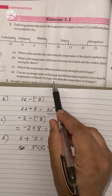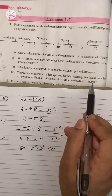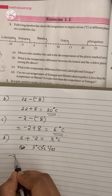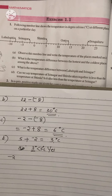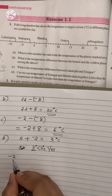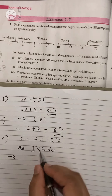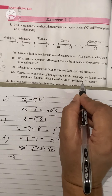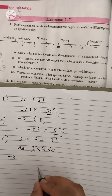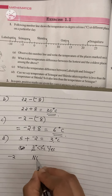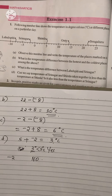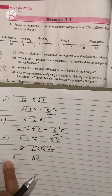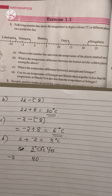Is the combined temperature also less than the temperature at Srinagar? The temperature at Srinagar is minus 2 and we got 3 degree Celsius. Since minus 2 is less than 3, the answer is no — 3 degree is greater than minus 2 degree. Therefore our answer is no, because minus 2 degree is less than 3 degree.